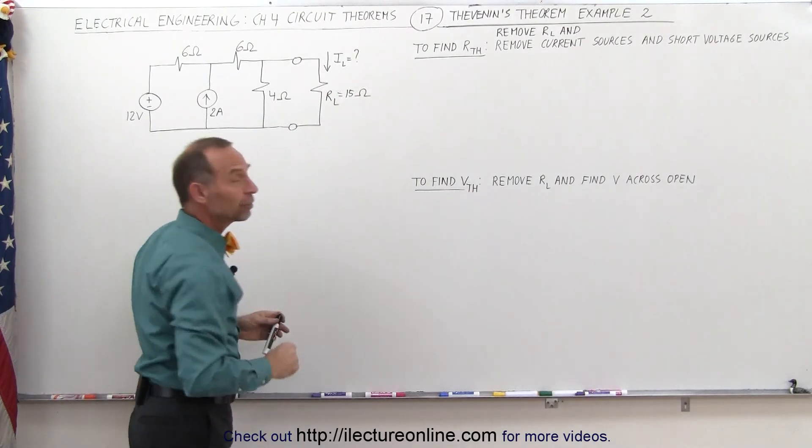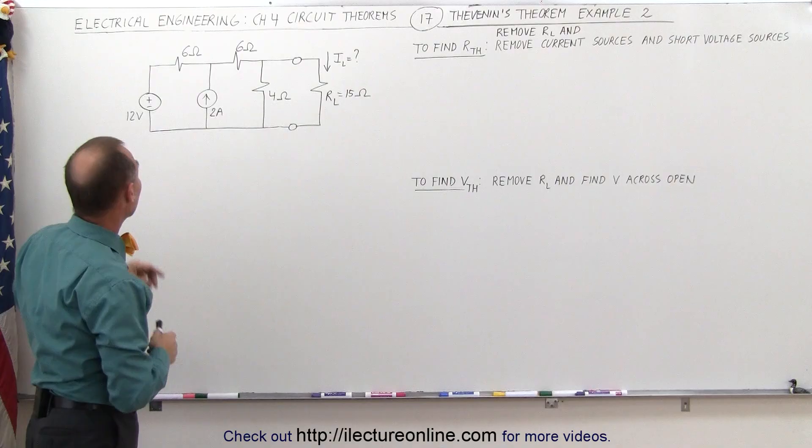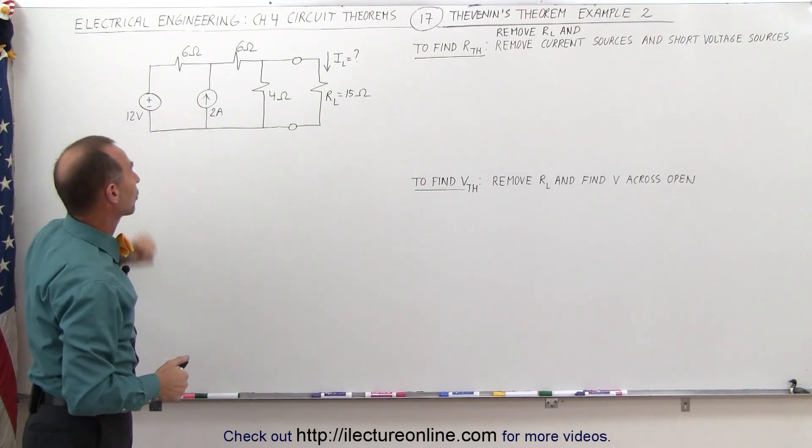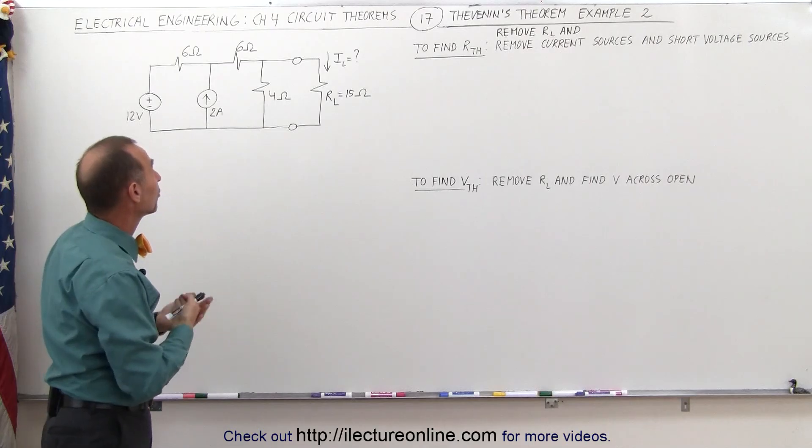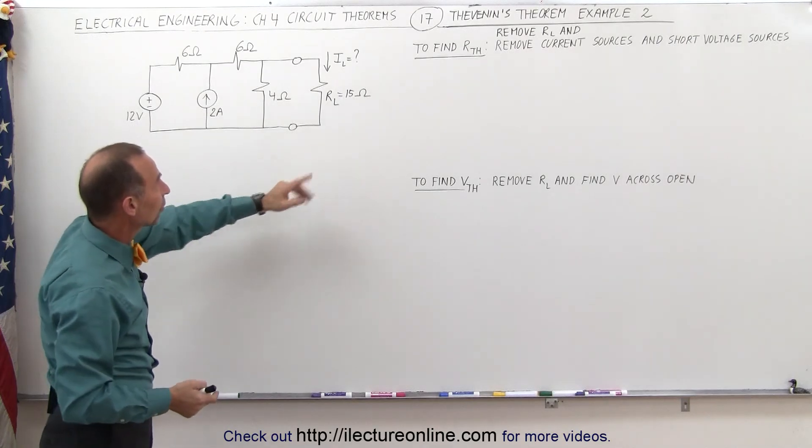The load resistor is equal to 15 ohms. The circuit has both a voltage source and a current source. The first thing we'll want to do is find the Thevenin's resistance. To do that, remove the load resistor.